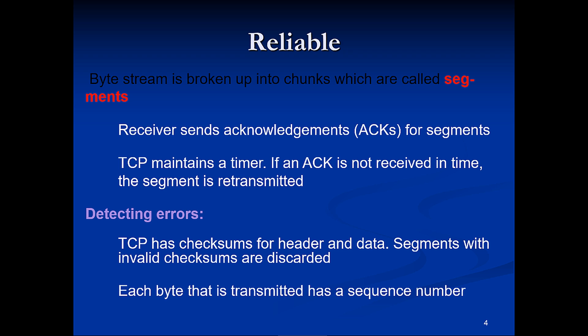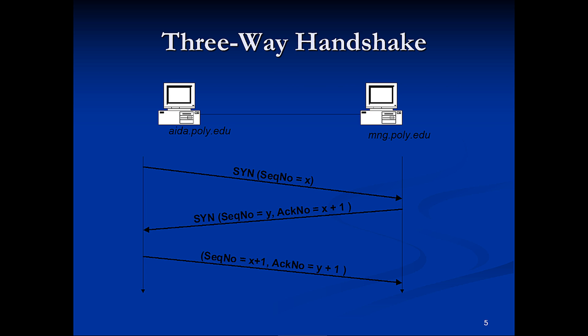Each byte that is transmitted has a specific sequence number. We may start with a sequence number x, and then we will get a response in the form of a sequence number and an acknowledgement. The first sequence number x will be the next acknowledgement number, so it will be x plus 1, and we will generate a new sequence number y. Then the new acknowledgement will be y plus 1, and so forth.